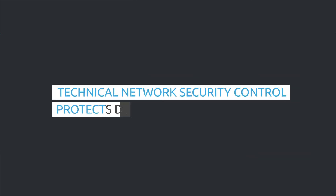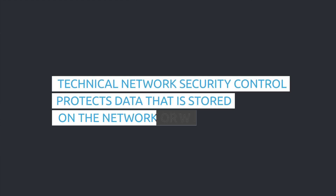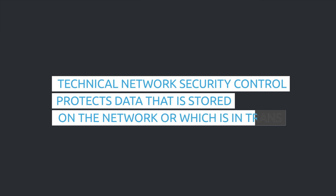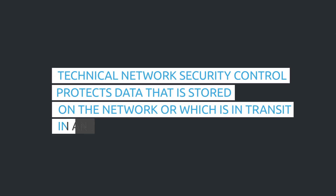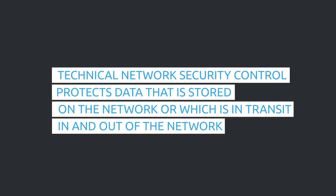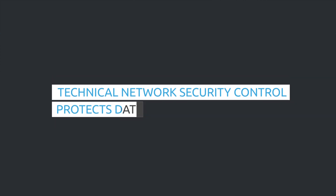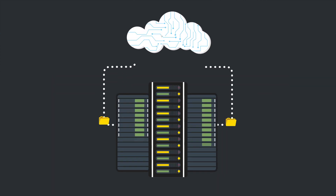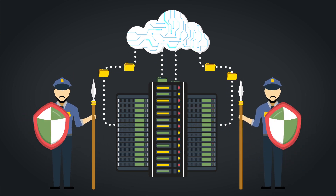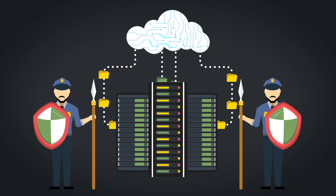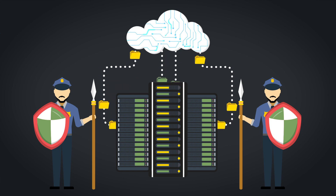Technical network security control protects data that is stored on the network — also known as data at rest — or which is in transit, also known as data in motion, in and out of the network. The security administrator needs to protect the data or system from unauthorized personnel and also protect against malicious activities from internal employees.